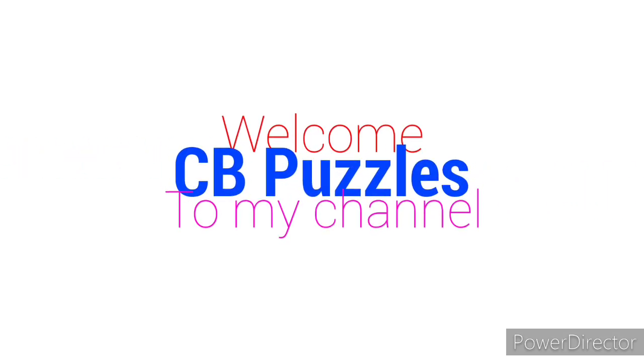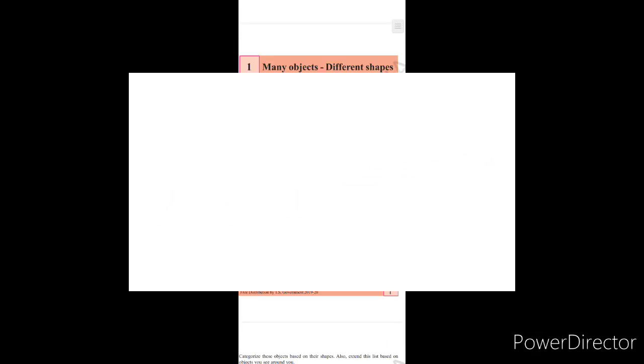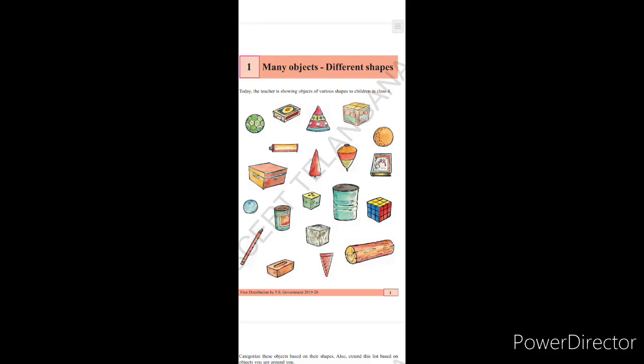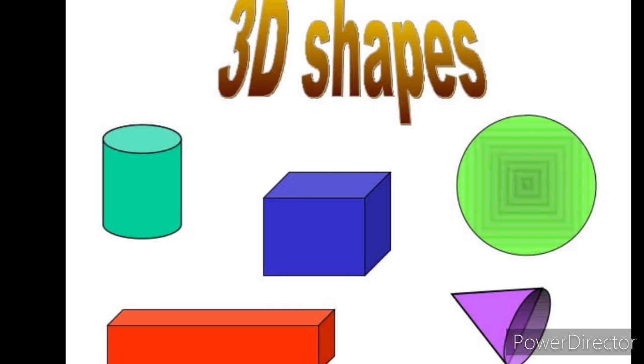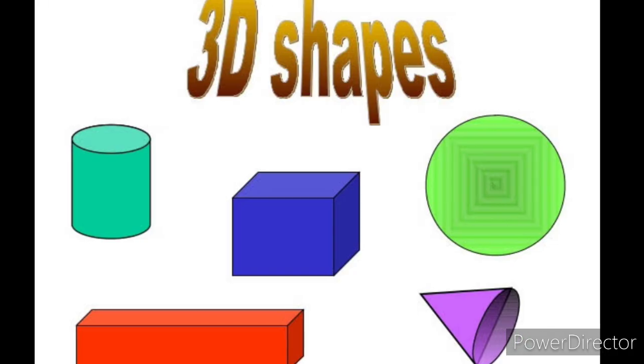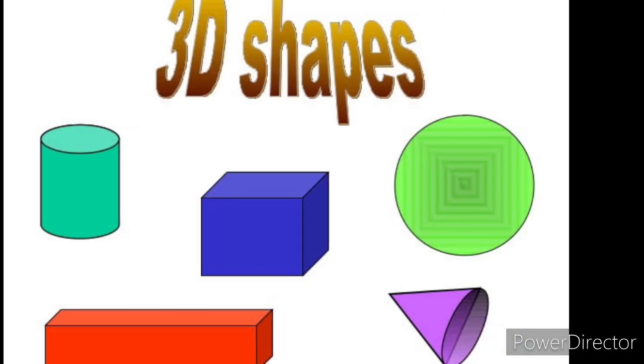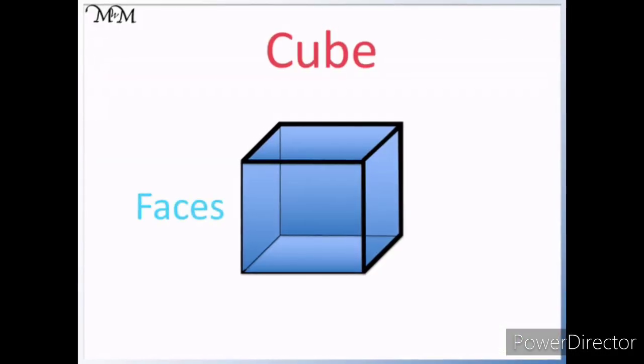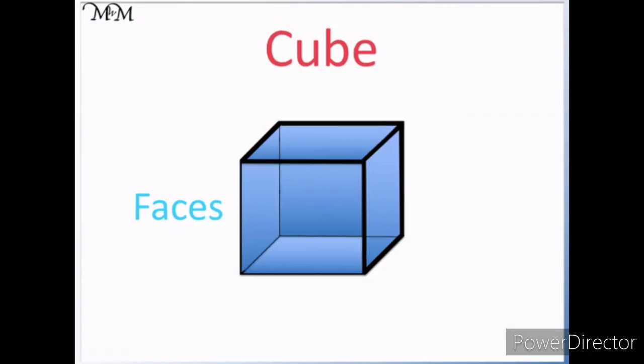Hello kids, today we are going to see about 3D shapes. There are different types of 3D shapes. You can see those here: we have cube, cuboid, sphere, cone, etc. So first we'll see about the cube.